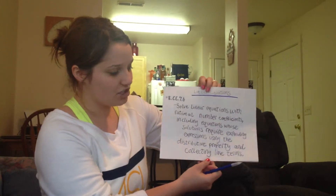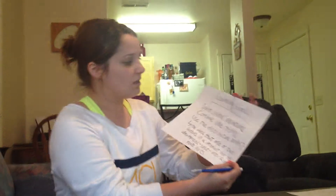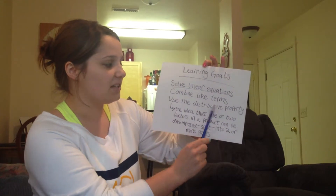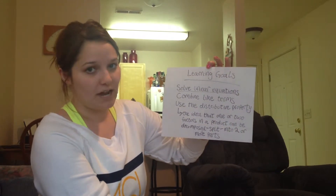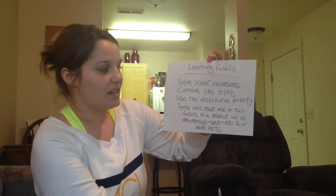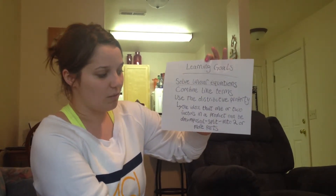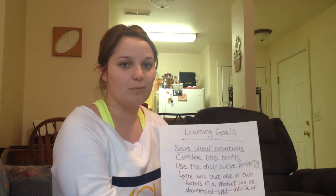In order to accomplish this standard today, we have a few learning goals: to clearly solve linear equations, to learn how to combine like terms, and to use the distributive property — which our book states is the idea that one or two factors in a product can be decomposed or split into two or more parts. We're going to work through a few problems, starting simple and moving to higher difficulty.